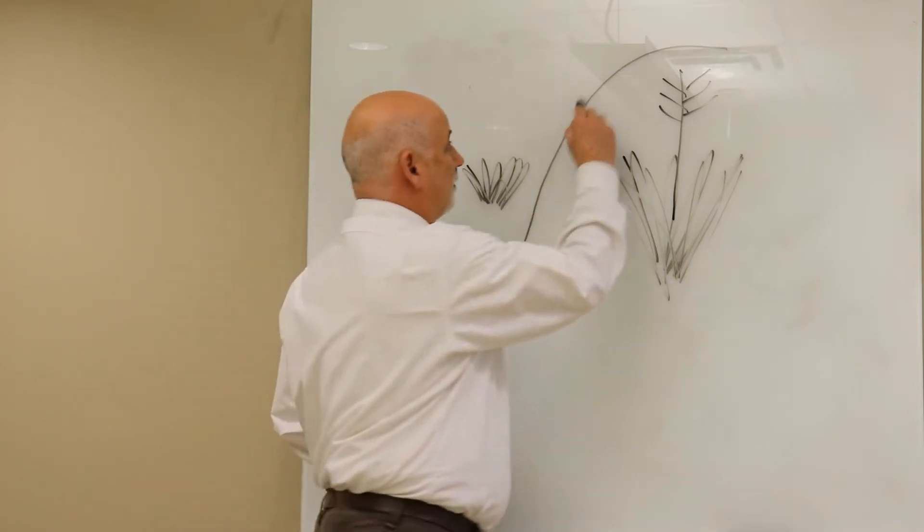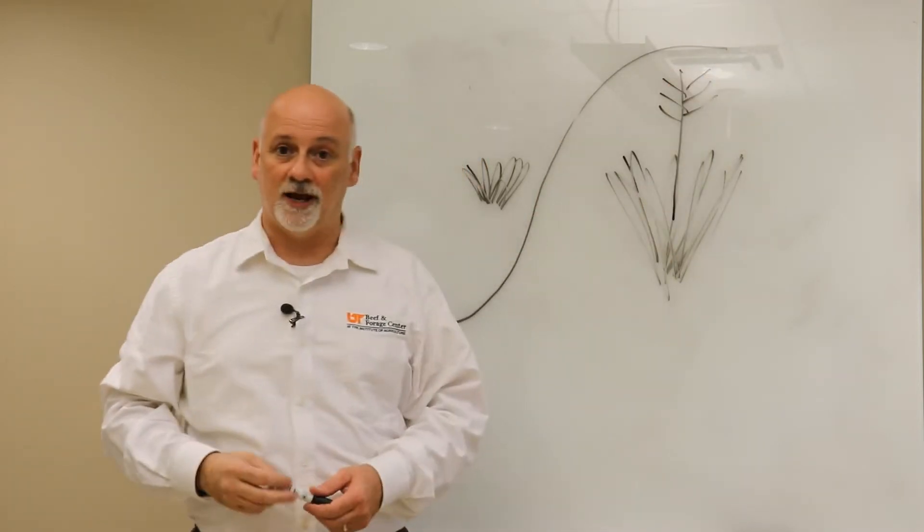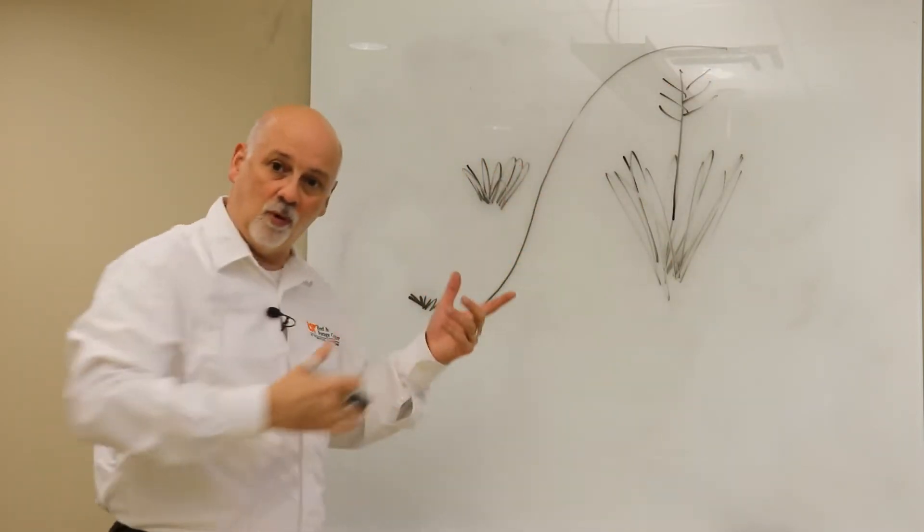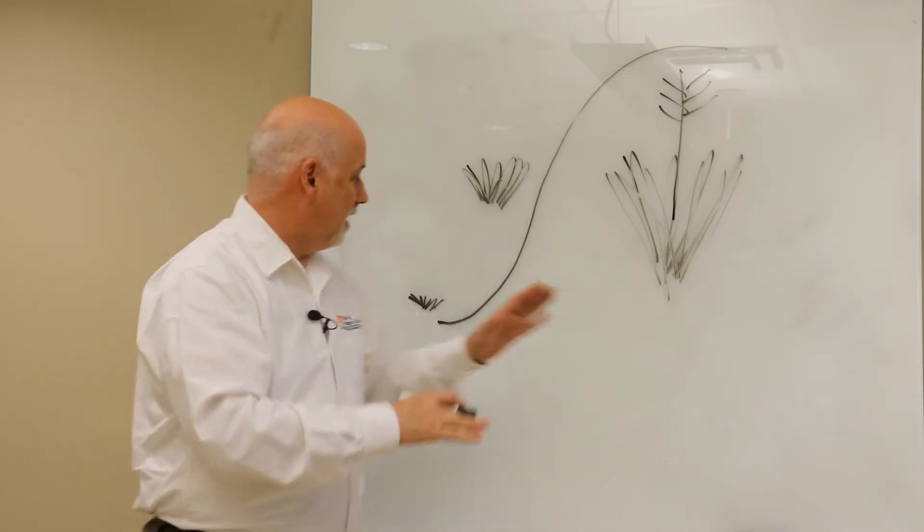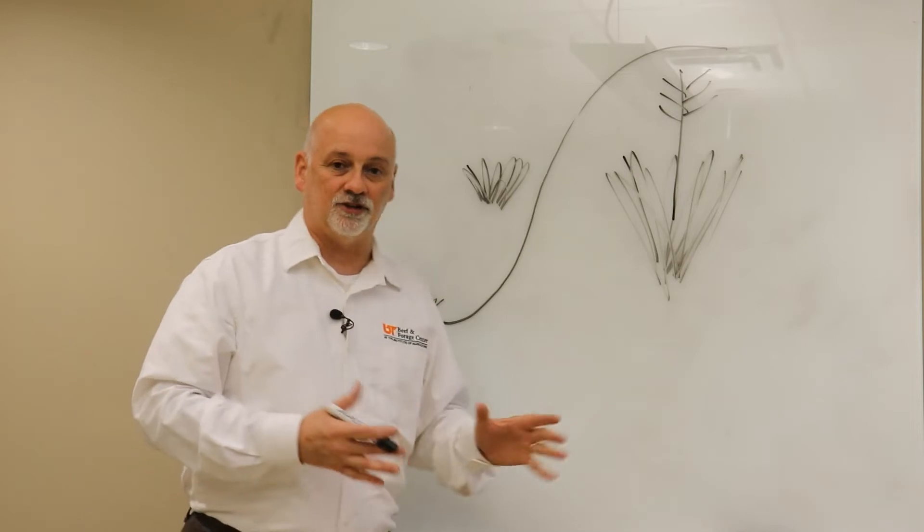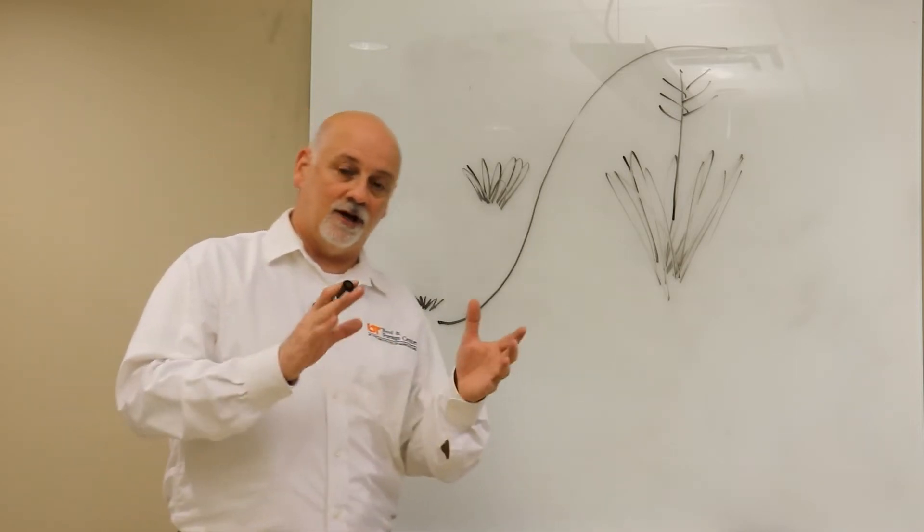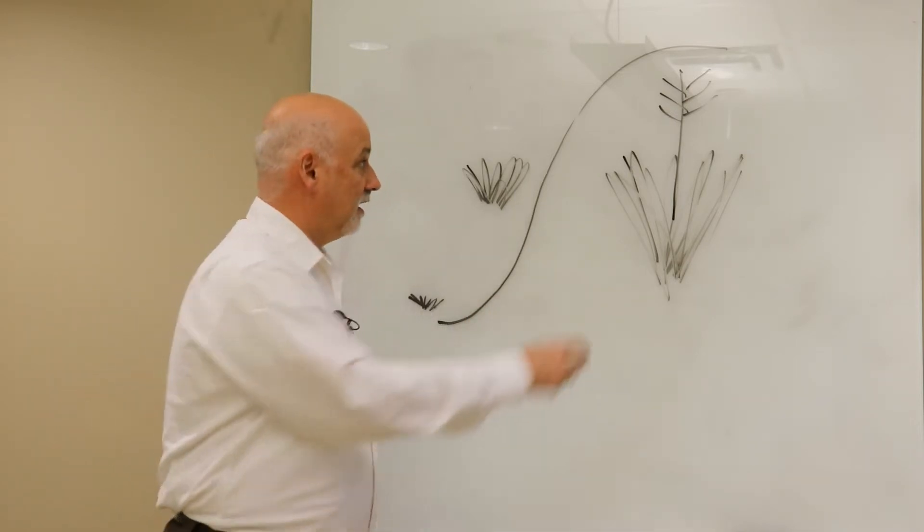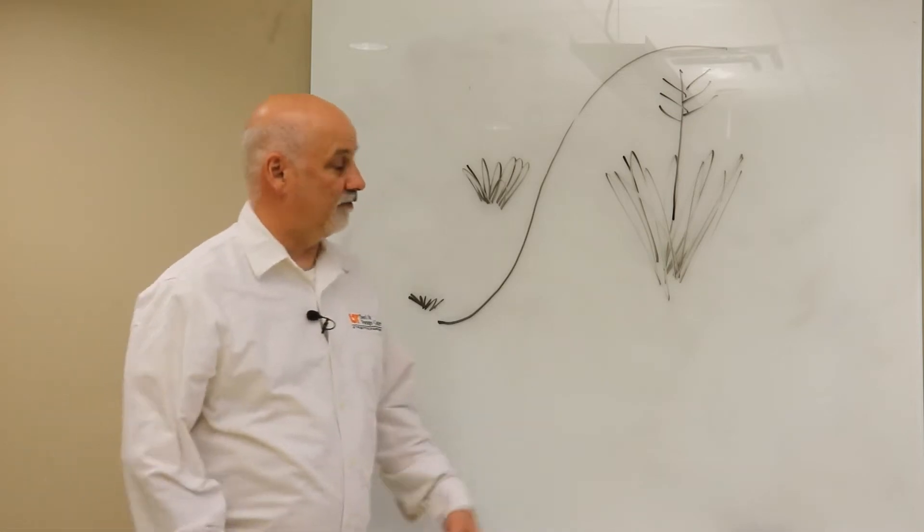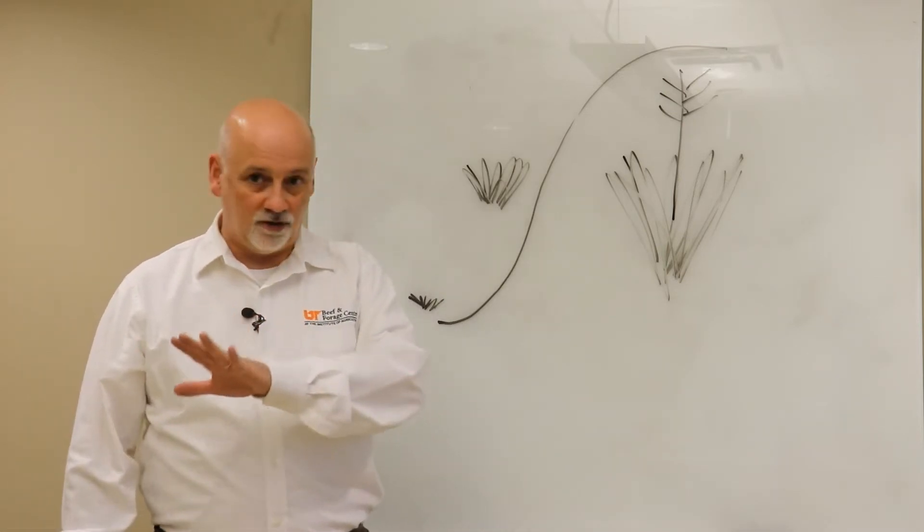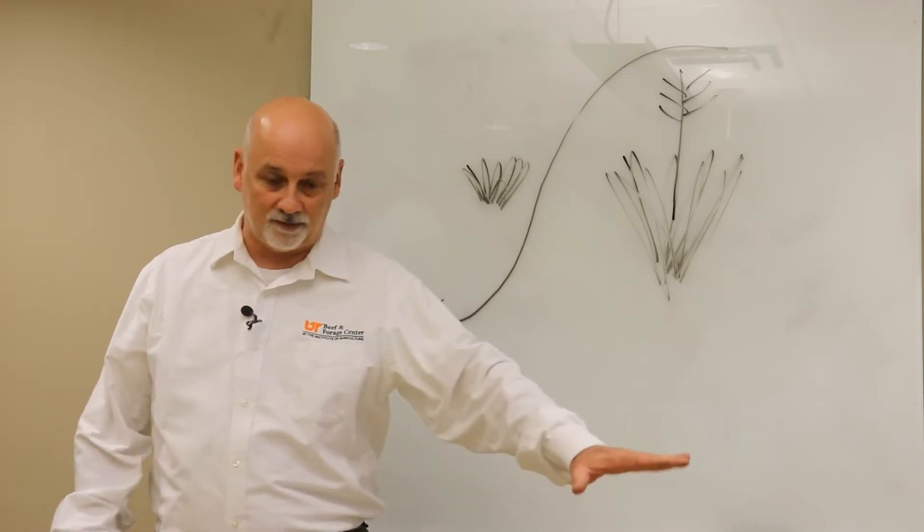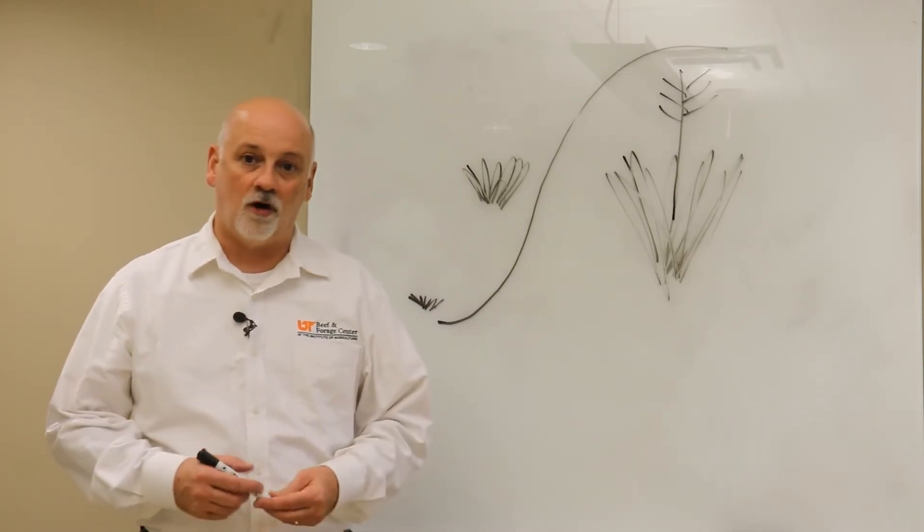The reason that this is important is because I can look at a pasture and look at what stage my plants are in and I can have an indication of how I need to manage it. For instance, if I go out to a field, it's mid to late May, my fescue pasture has got a bunch of seed heads up there, it's a couple feet tall.